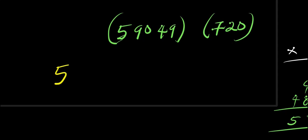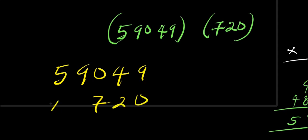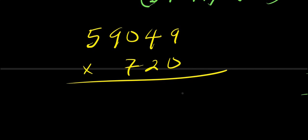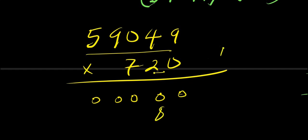So we have 5,949 — that is 59,049 — times 720. Multiplying by 0 gives all zeros for the first partial product. Then multiplying by 2: 2 times 9 is 18, write 8 carry 1; 2 times 4 is 8 plus 1 is 9; 2 times 0 is 0; 2 times 9 is 18, write 8 carry 1; 2 times 5 is 10 plus 1 is 11. So the second partial product is 118,098.